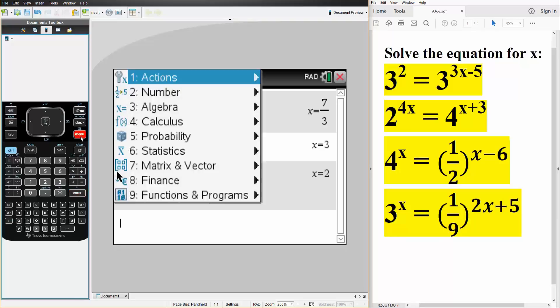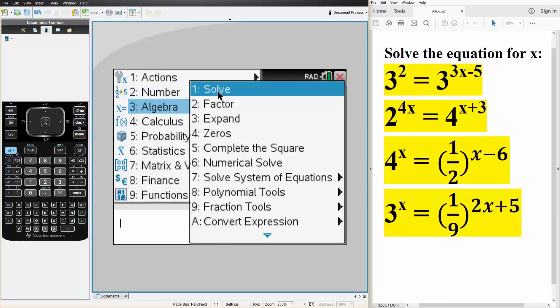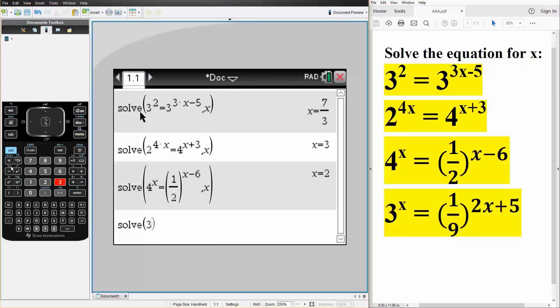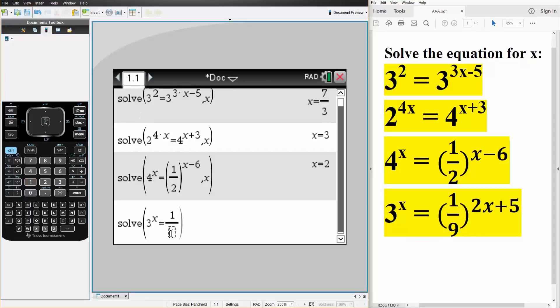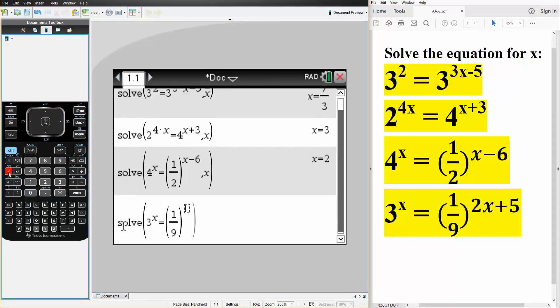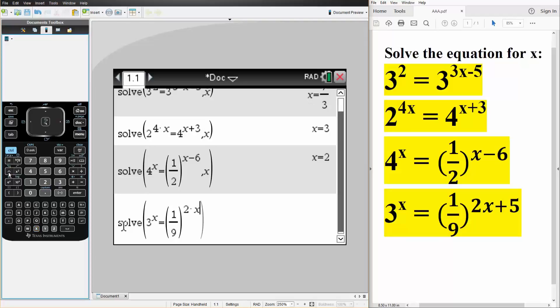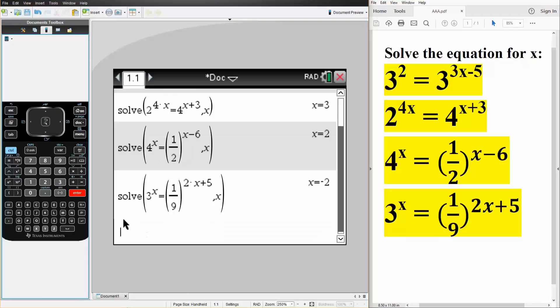And for the last problem, menu, algebra, solve. We have 3 raised to x is equal to, control division, 1 divided by 9 raised to 2 times x plus 5. And we're solving for x, so comma x, hit enter, and the value of x is equal to minus 2.